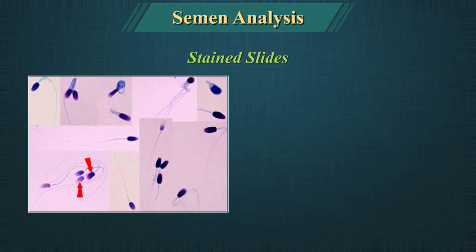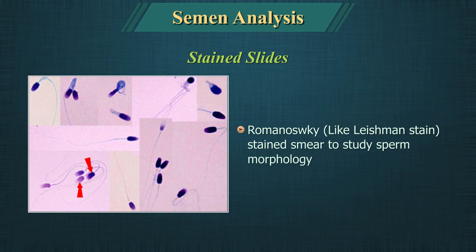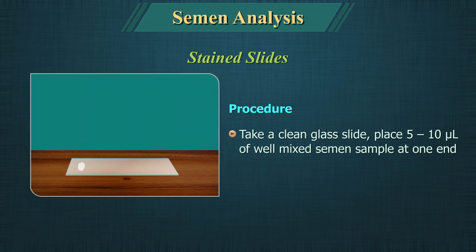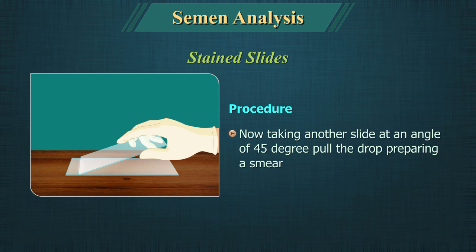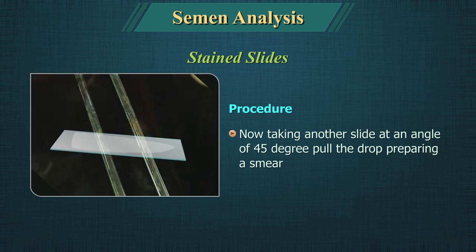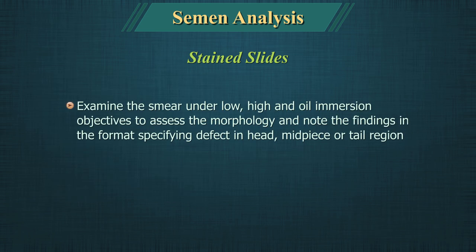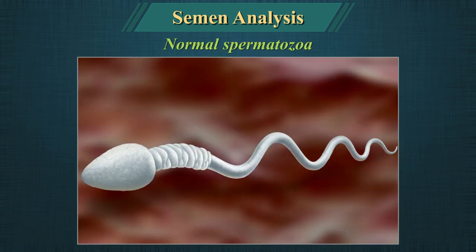Stained slides for morphology: Leishman stained smears are used to study sperm morphology. Take a clean glass slide, place 5 to 10 microliters of well-mixed semen sample, then take another slide at an angle of 45 degrees and pull the drop of semen to prepare a smear. Allow it to air dry and stain using Leishman stain. Examine the smear under low power, high power and oil immersion objectives to assess morphology, noting defects in the head, midpiece or tail region. A normal spermatozoon consists of a head, midpiece and a tail.